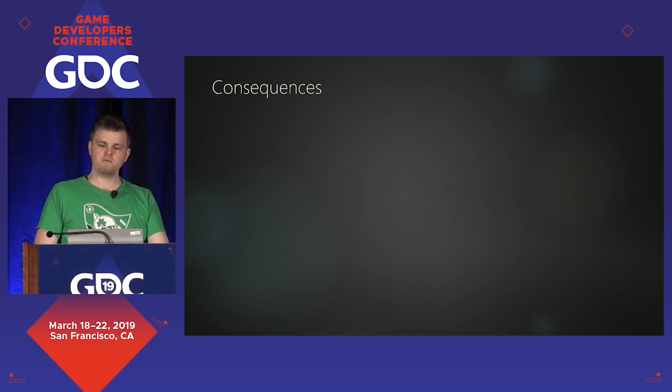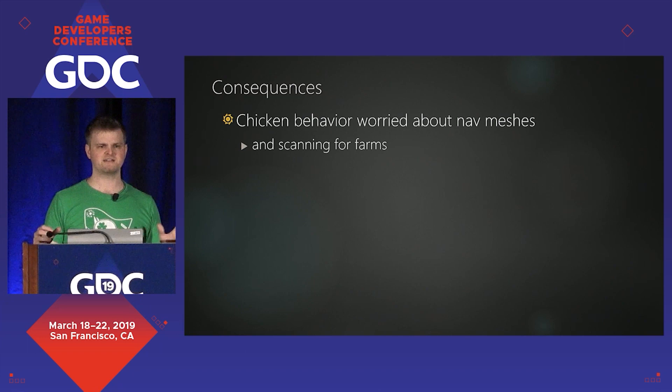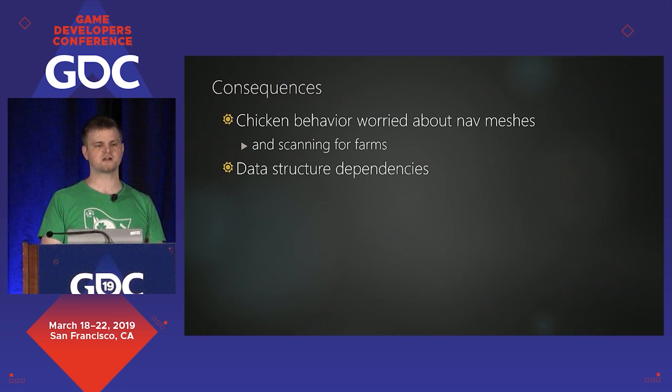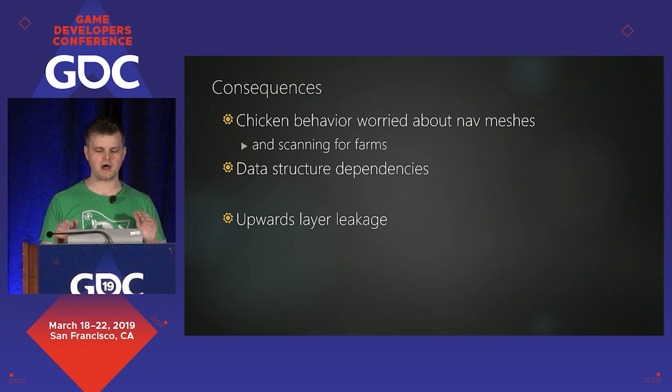But now we have the opposite problem — a piece of code previously concerned with pecking and clucking is now also calculating distance between points and navmesh faces, and scanning through the game level to find all the farms. All this knowledge of the underlying structure is going into the chicken's mind. If you want to change how navmesh faces are stored, now you need to edit how chickens work. This is the opposite problem: upwards layer leakage, because the service refused to give the content what it needed, and now service-like code is going into the content.